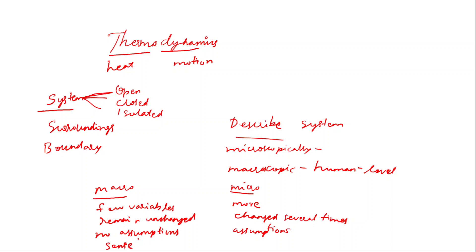Macroscopic properties such as volume, size, and temperature can be directly measured. Microscopic quantities, by contrast, must be calculated — they cannot be directly observed at the human scale.